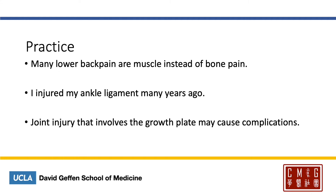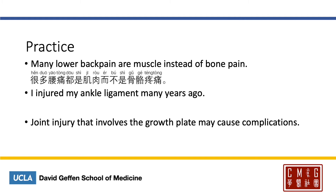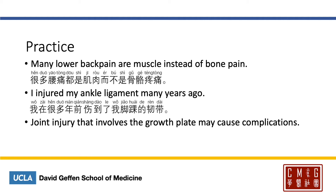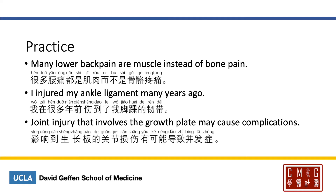Here are some practices. Many lower back pains are muscle instead of bone pain — in Mandarin: 很多腰痛都是肌肉，而不是骨骼疼痛. I injured my ankle ligament many years ago — 我在很多年前伤到了我脚踝的韧带. Again, 韧带 is ligament and 脚踝 is ankle. To say that joint injury involving the growth plate may cause complications, you can say 影响到生长板的关节损伤有可能导致并发症. 并发症 means complications; 并发 meaning occurring at the same time.